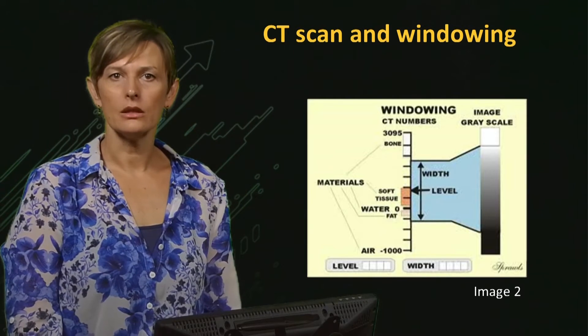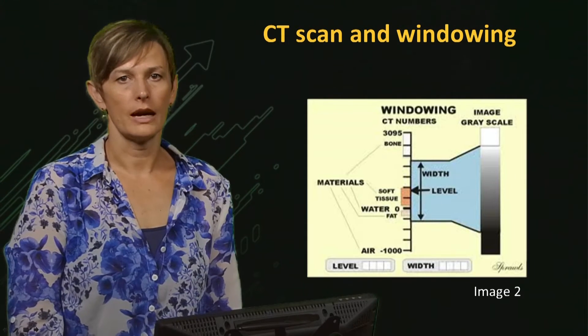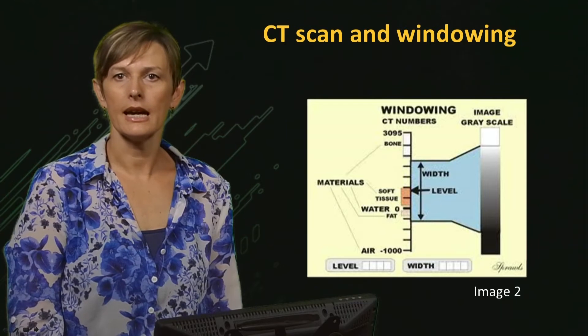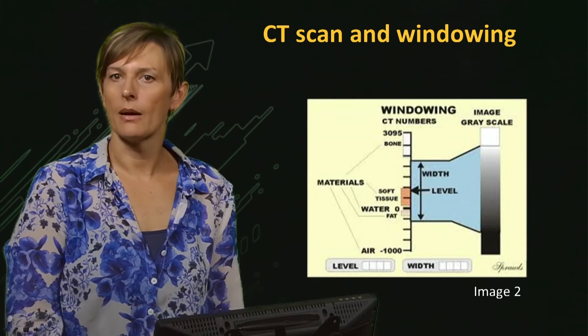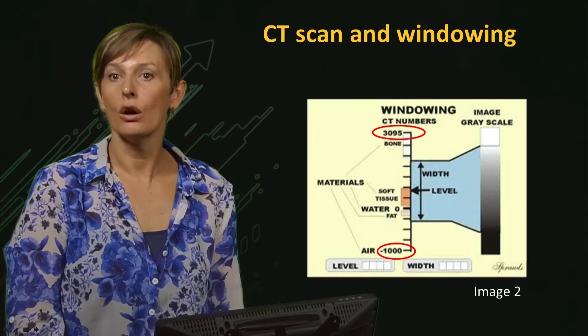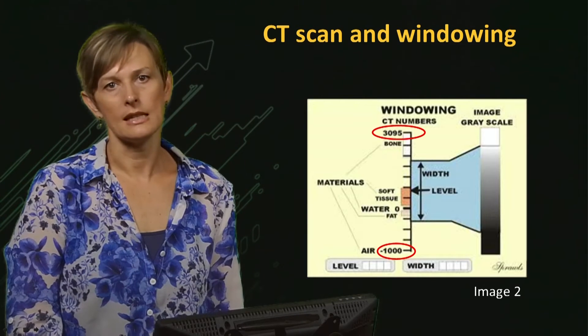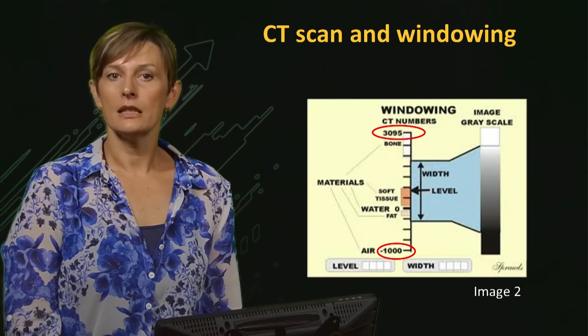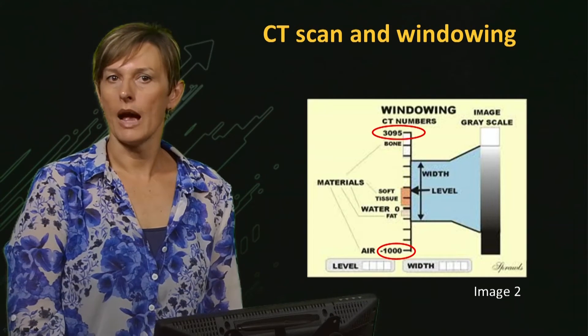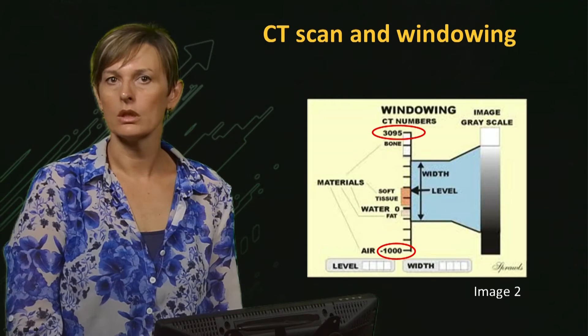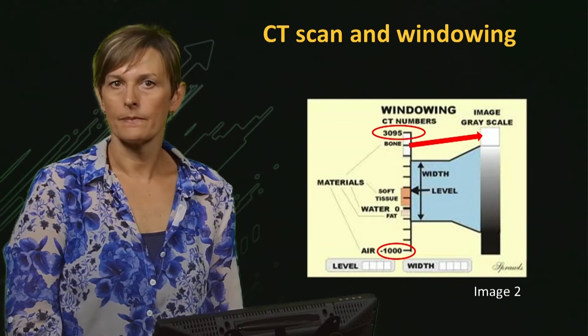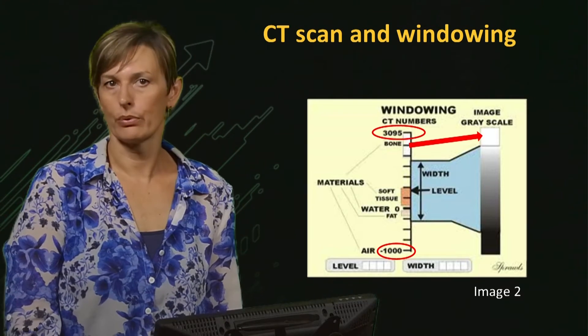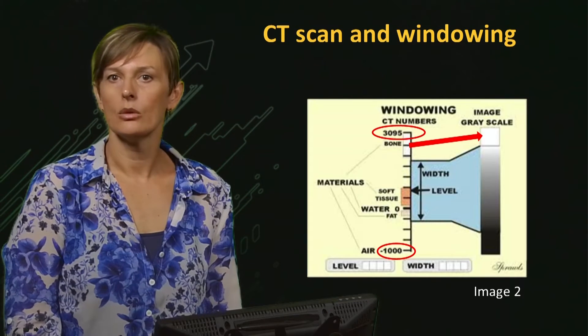In the clinic, the radiologist uses a software that automatically assigns HU values between minus thousand and over thousand to every voxel of a CT image in order to analyze the data. Tissues that strongly absorb X-rays, such as bone, appear white, while others that absorb poorly, such as air, appear black.